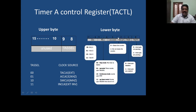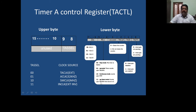In the lower byte, you can select different clock divider intervals, which are selected using two bits called IDX. MCX bits set different modes of operation: 00 halts the timer; 01 counts up to the value stored in the Timer A capture compare register and stops; 10 counts up to the maximum value FFFF; and 11 counts up to the Timer A capture compare register value and then counts back down — like a ramp up and ramp down.